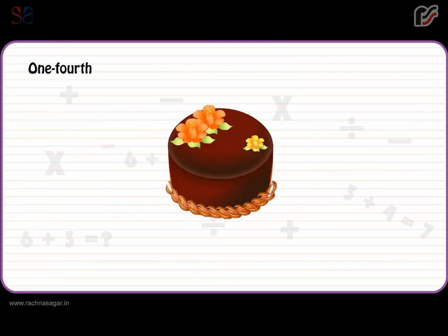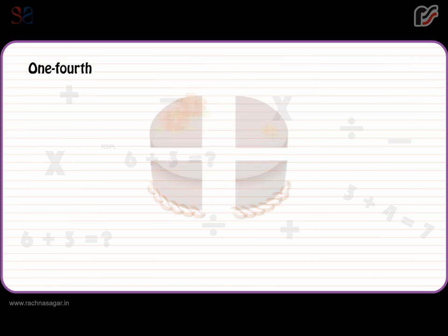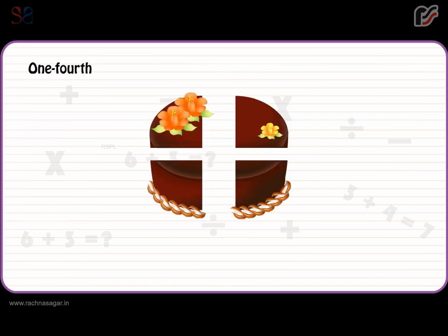One Fourth. When a whole thing is divided into four equal parts, each part is called one fourth or quarter. One fourth is written as 1/4. And 1/4 + 1/4 + 1/4 + 1/4 = 1 whole.